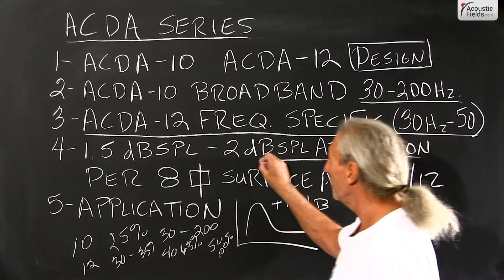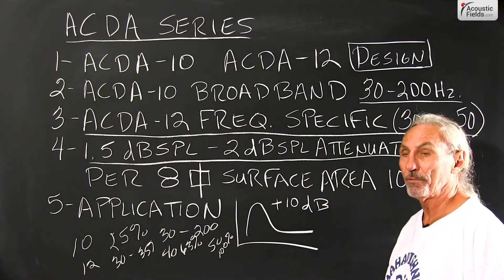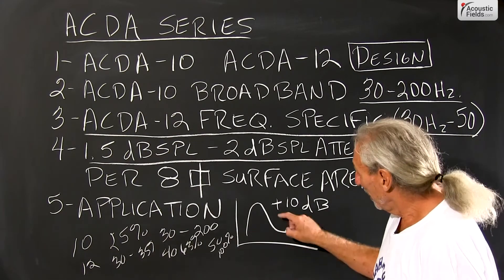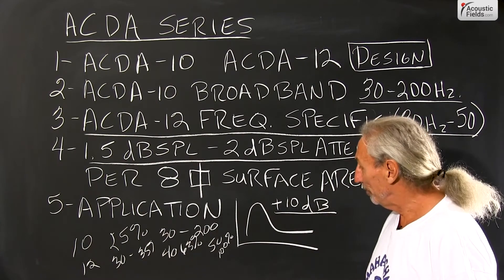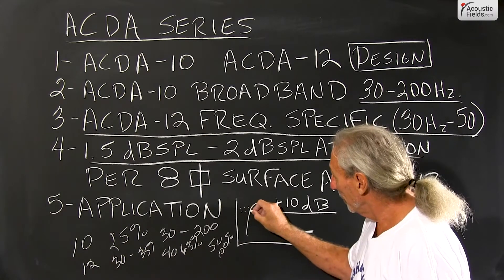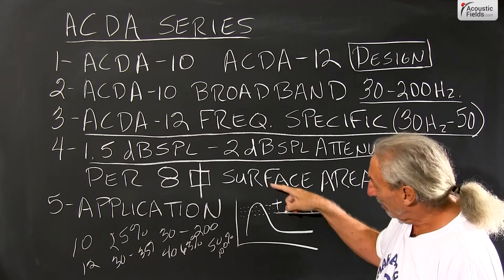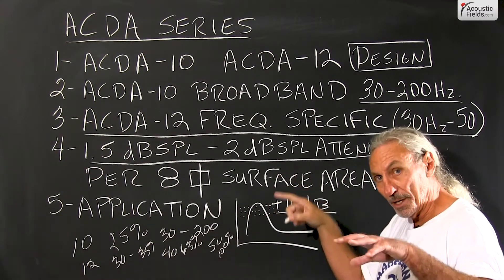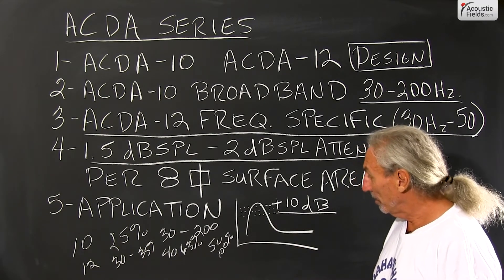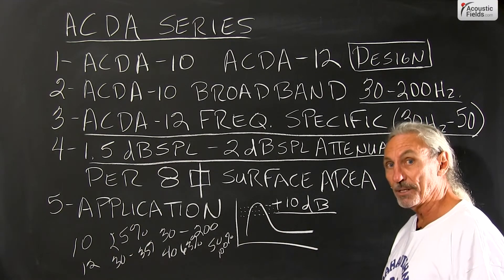We know that they attenuate about 1.5 to 2 dB for every 8 square feet of surface area. So if we have a +10 dB bump, we know that 1 unit is going to get us about 2 dB, 2 units about 4 dB, 3 units about 6 dB. We keep working on that pressure trough and lowering it to a baseline level. You can see the number of units you'll need adds up quickly.